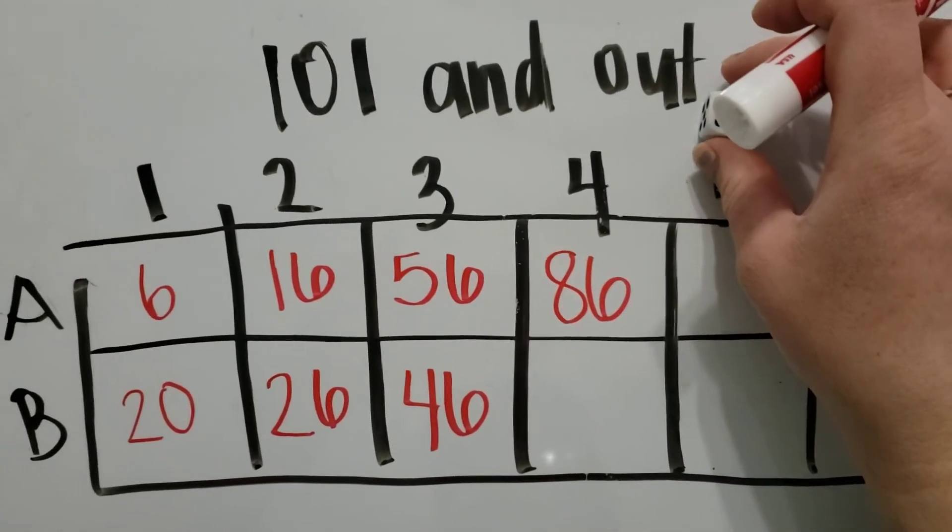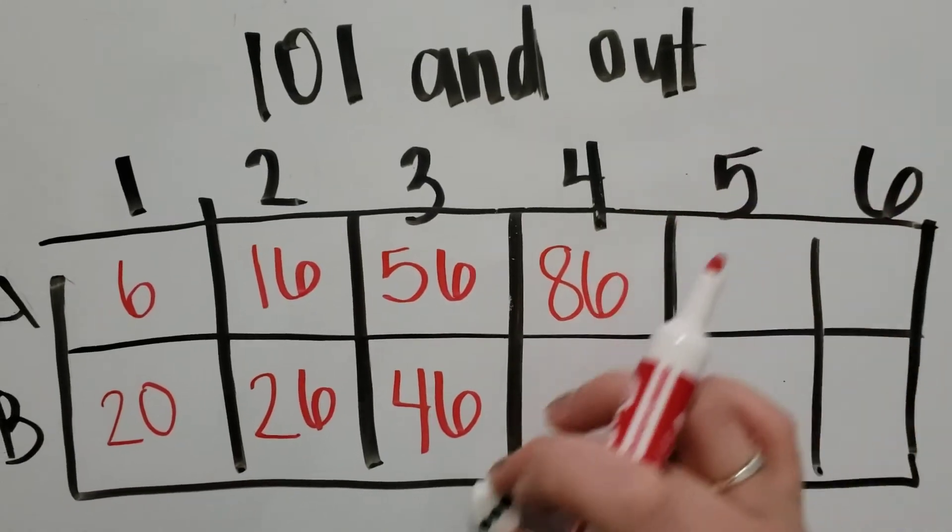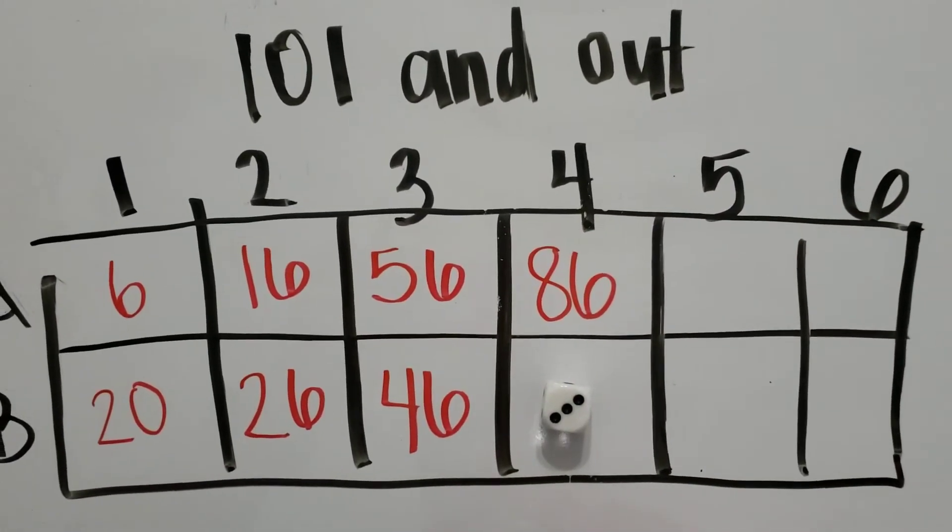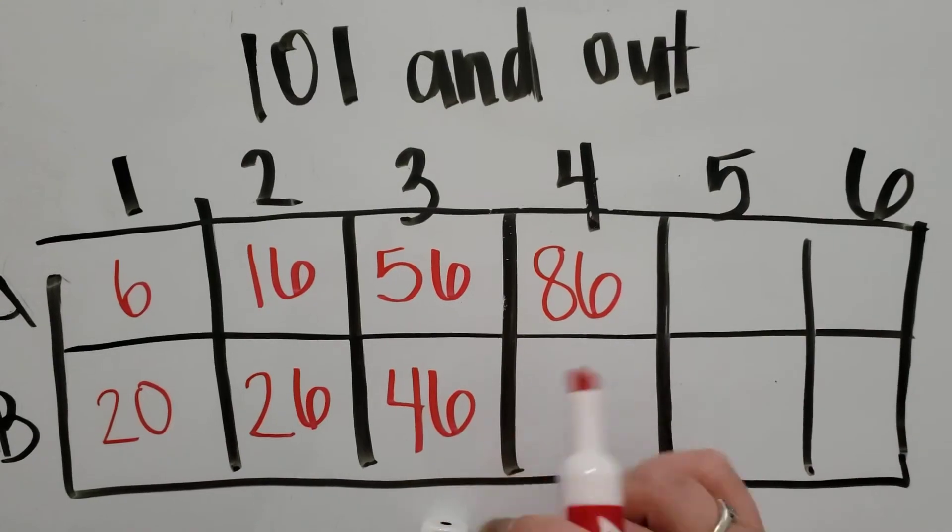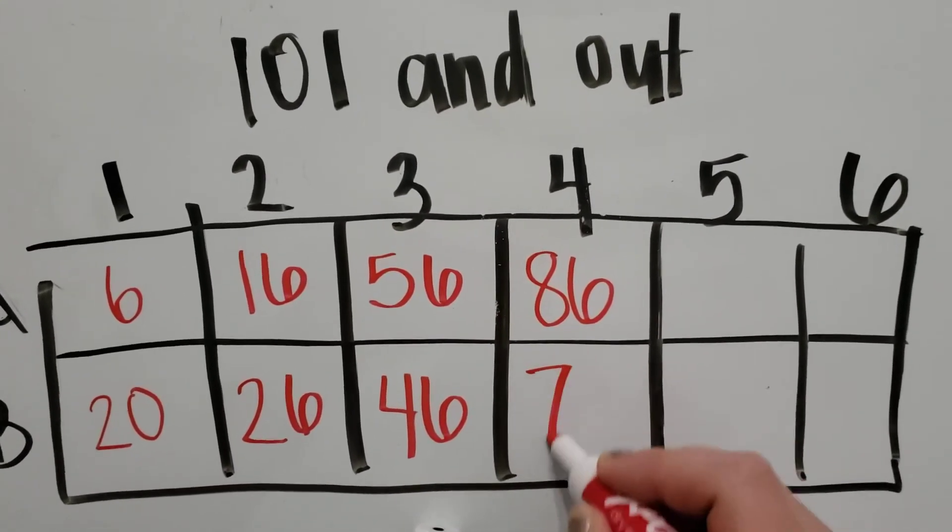I'm getting close to 100, but I want to make sure I don't go over. Then the second team would roll a three. So that can be three or 30. Now where I am at 46, I think I'm going to make that 30 so that I can be at 76.